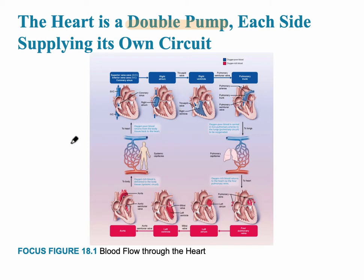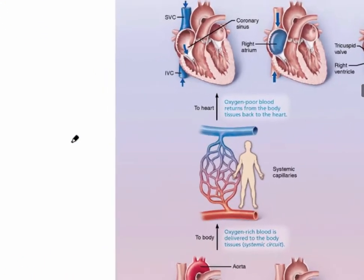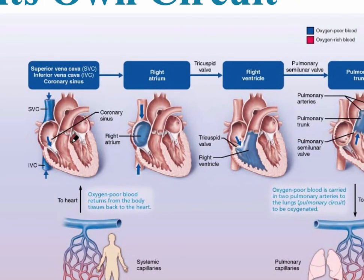We're going to start looking at the right atrium, which is usually where people begin when they trace the pathway of blood through the heart. We start with deoxygenated blood going into the right atrium through three blood vessels. The coronary sinus is one of the cardiac veins because blood has to be delivered to the myocardium as well. Remember, if it's blue, it's signifying deoxygenated or poorly oxygenated blood.